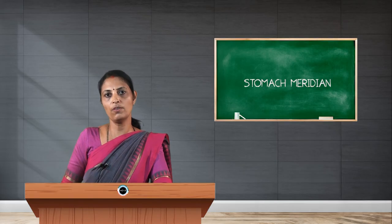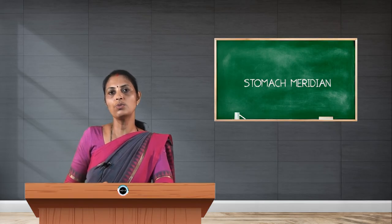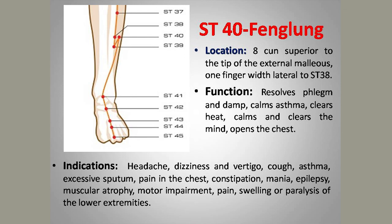Stomach 40, Fenglong, is used as a specific point for bronchial asthma. It is located 8 cun superior to the tip of the external malleolus, 1 finger-breadth lateral to Stomach 38.